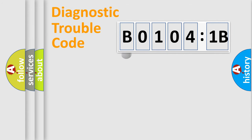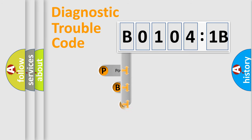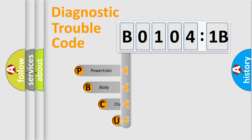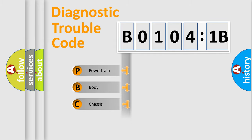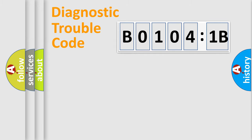First, let's look at the history of diagnostic fault code composition according to the OBD2 protocol, which is unified for all automakers since 2000. We divide the electric system of an automobile into four basic units: Powertrain, Body, Chassis, and Network.